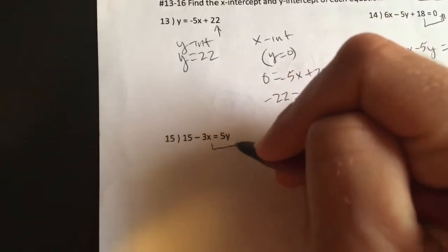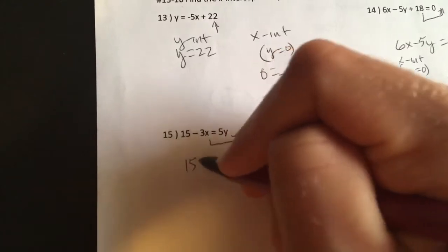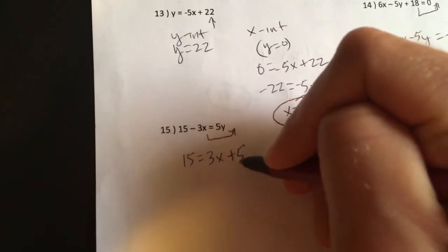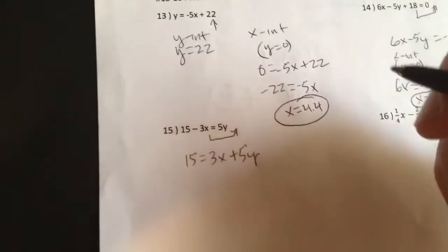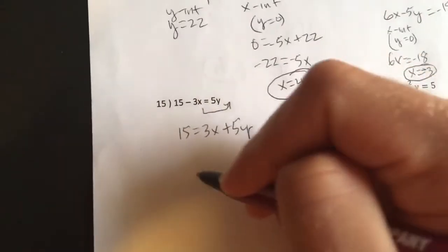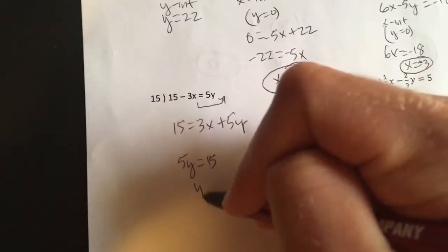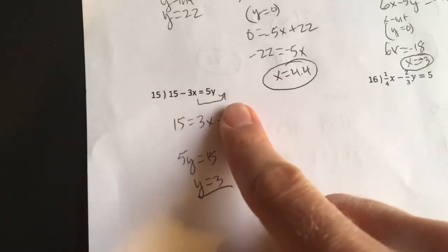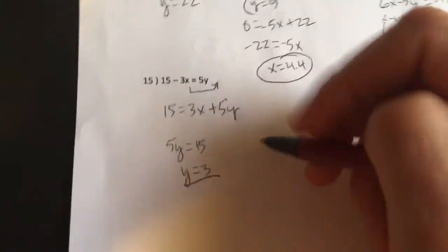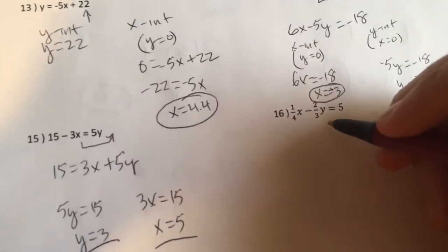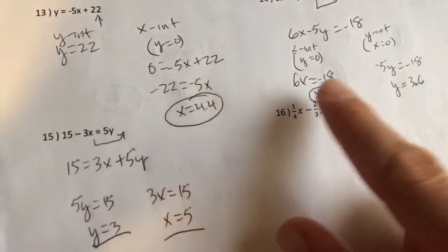All right. Next one here. What do we got? Well, I could move this over. Then, I have 15 is equal to 3x plus 5y. Now, I have it in standard form. So, cover up the x. 5y is equal to 15. You've got a y-intercept of 3. Cover up the y. You've got 3x is equal to 15.